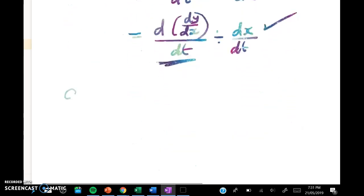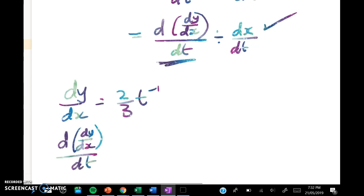So what was dy/dx? dy/dx was equal to 2 thirds times t to the negative 1. So the derivative of that with respect to t is negative 2 thirds t to the negative 2.